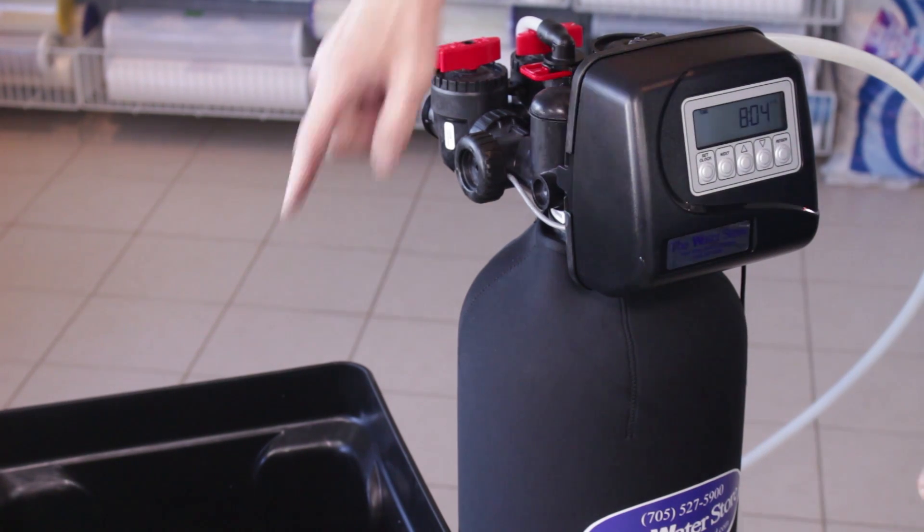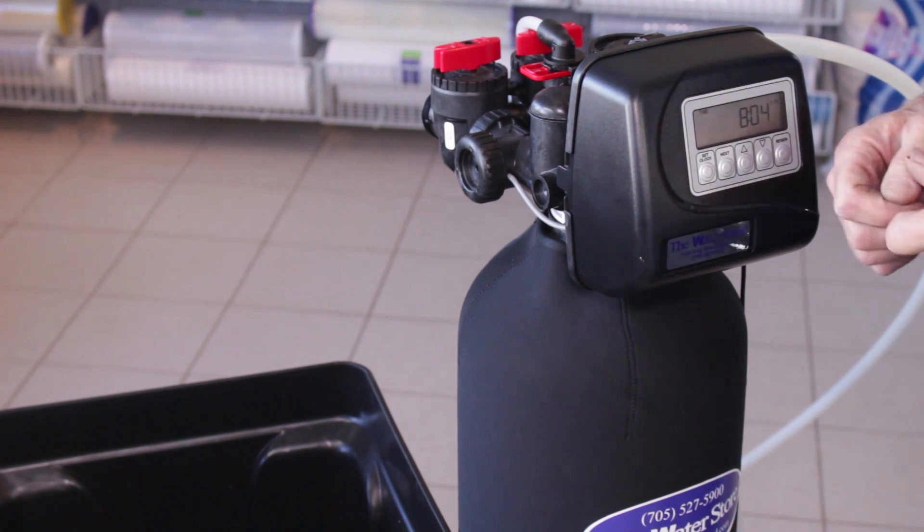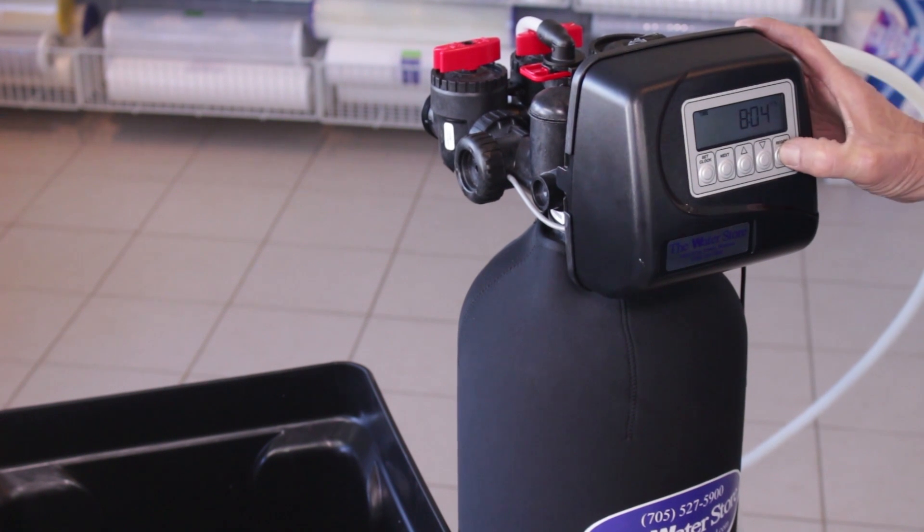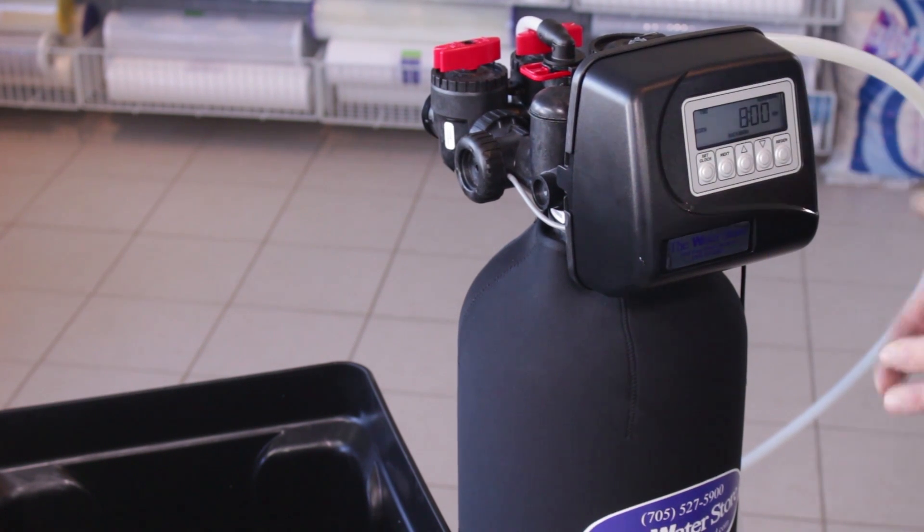Now what we would need to do is add five gallons of water to the brine tank and then we would start to put the unit into backwash. We do that by pushing the regen button and holding it down and usually after about five seconds you can hear the motor start up like now.